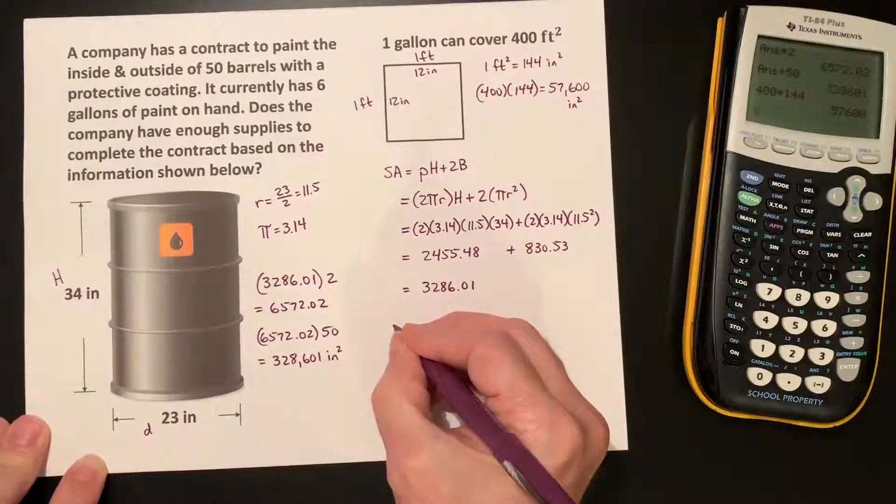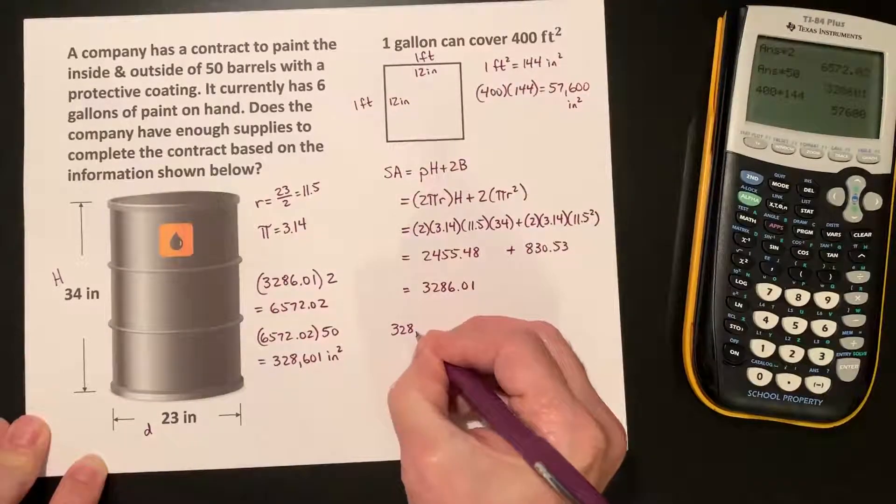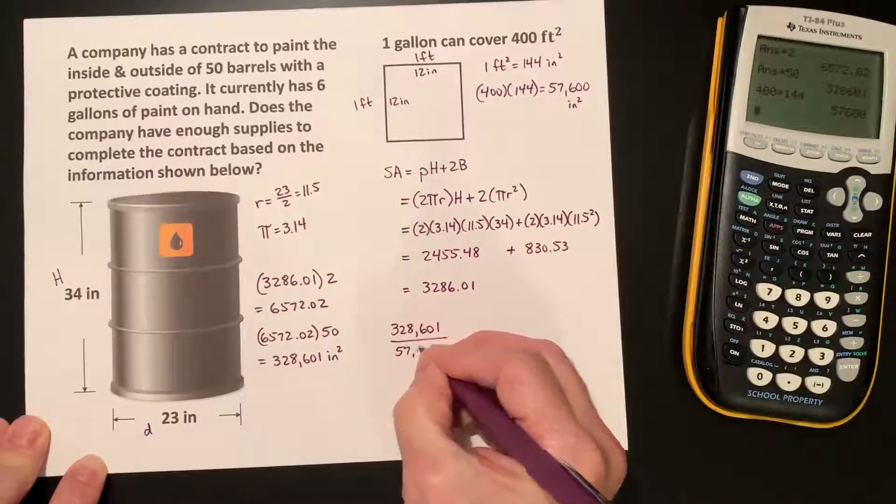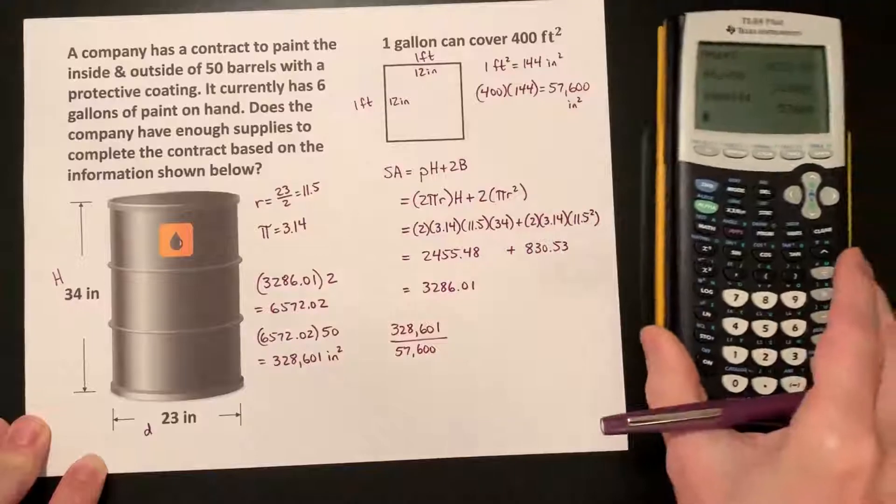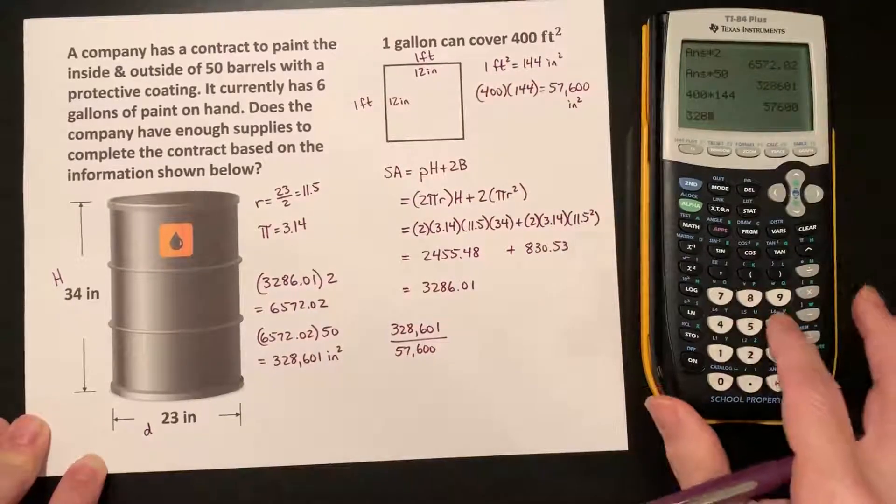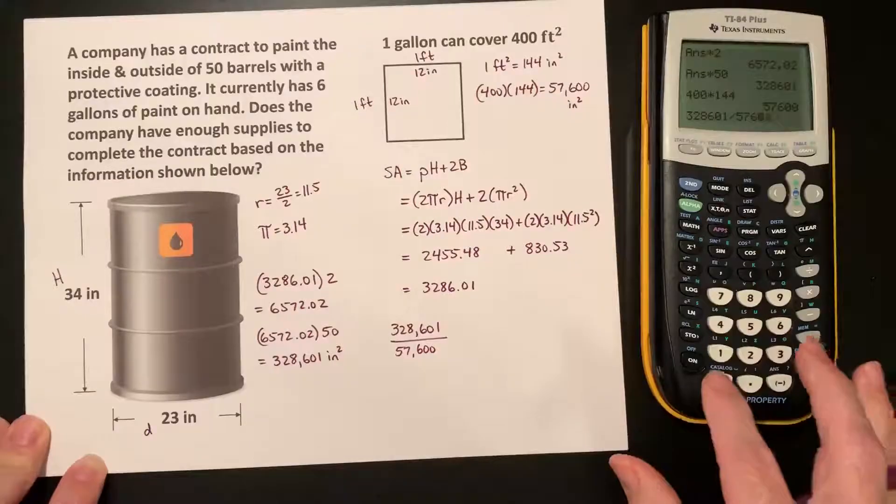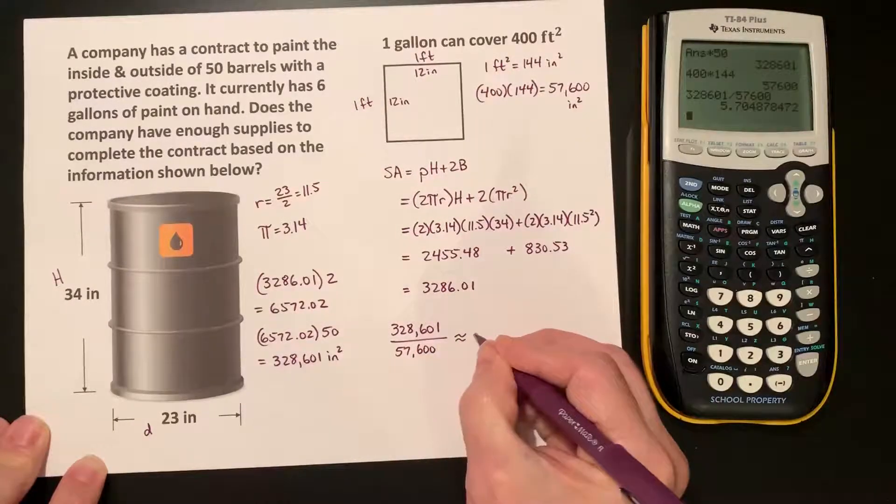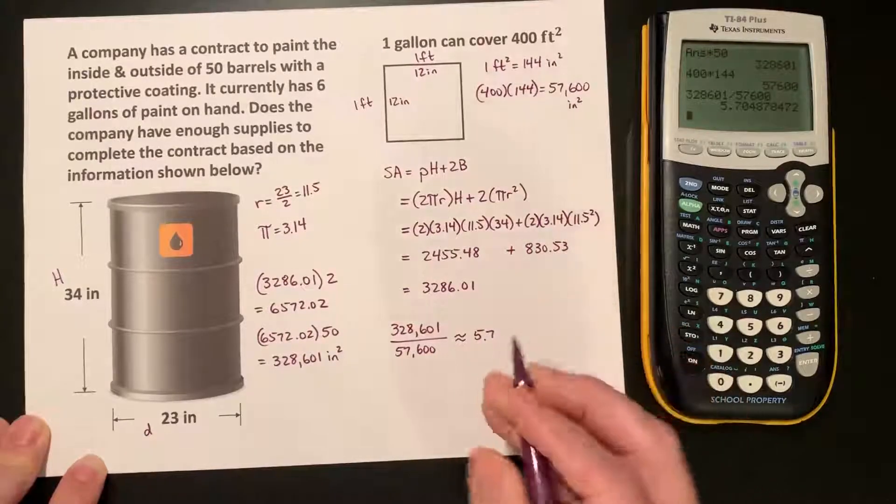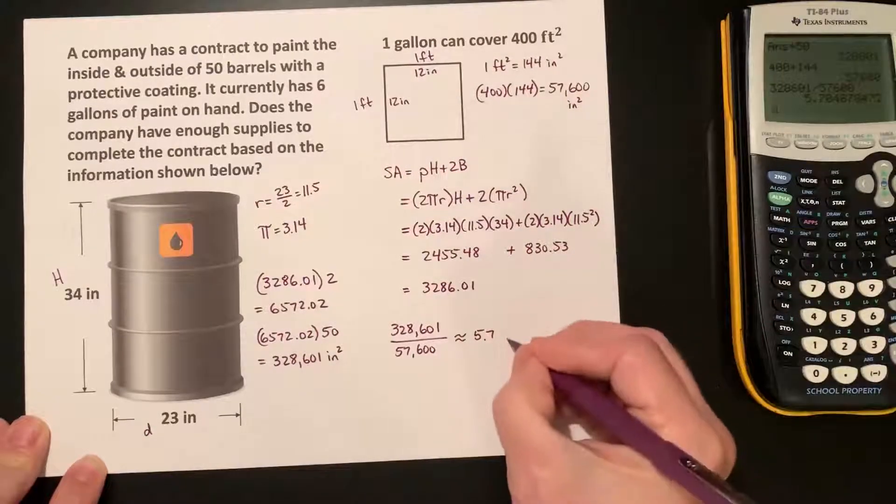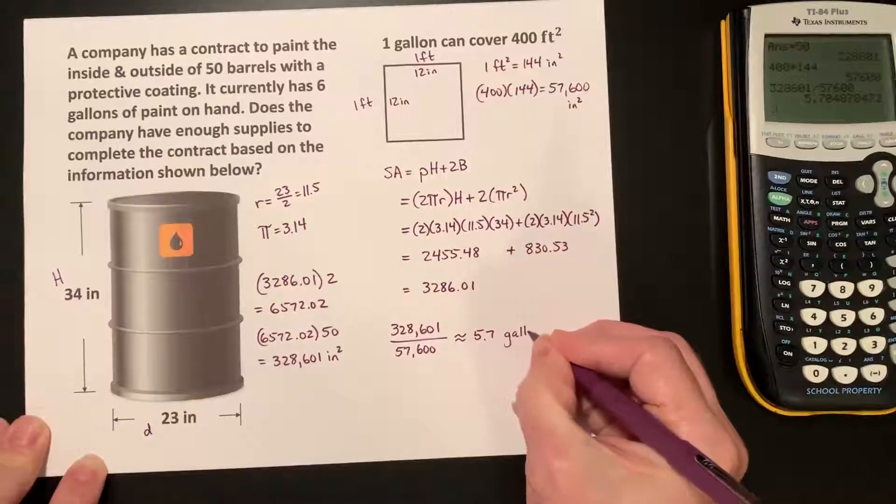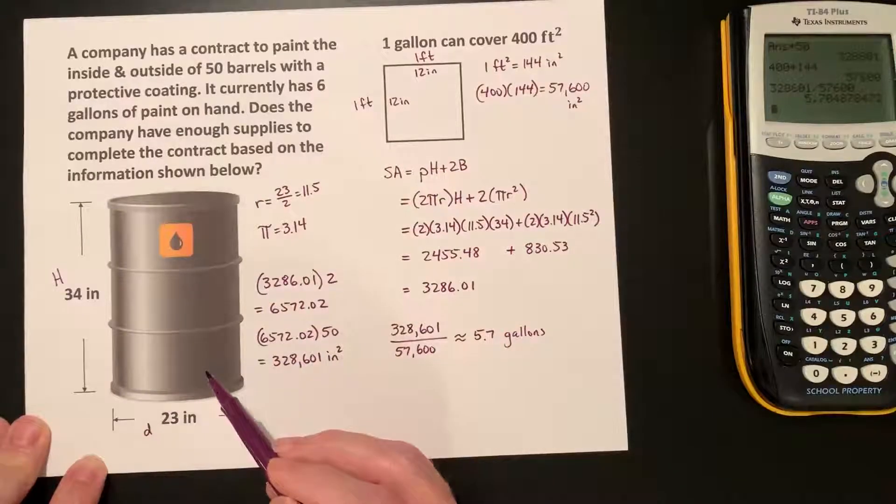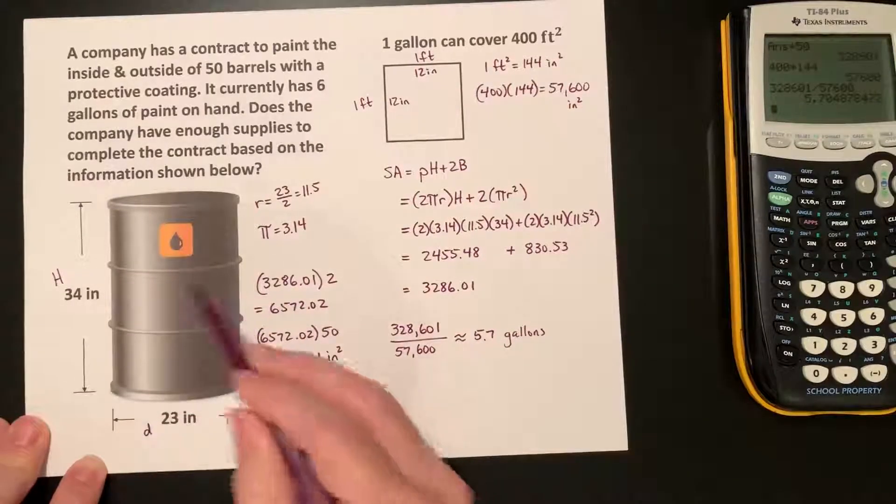So, finally, what we're going to do is we're going to take 328,601 and we're going to divide that by 57,600. Now, the value that we get is approximately 5.7. This is 5.7 gallons of paint would be needed in order to paint the inside and the outside of 50 barrels of this size.